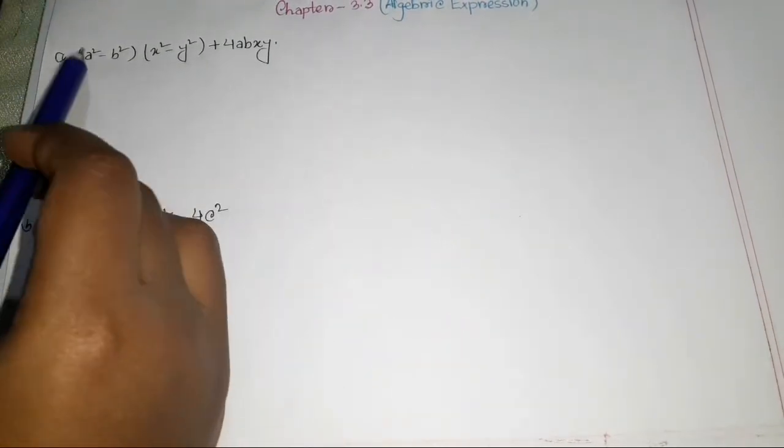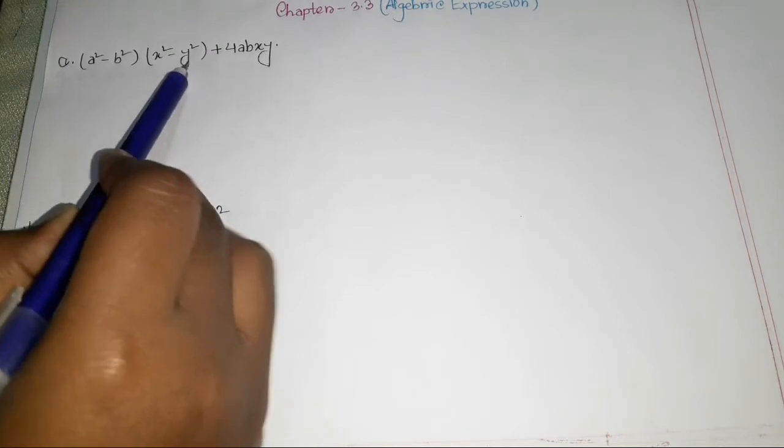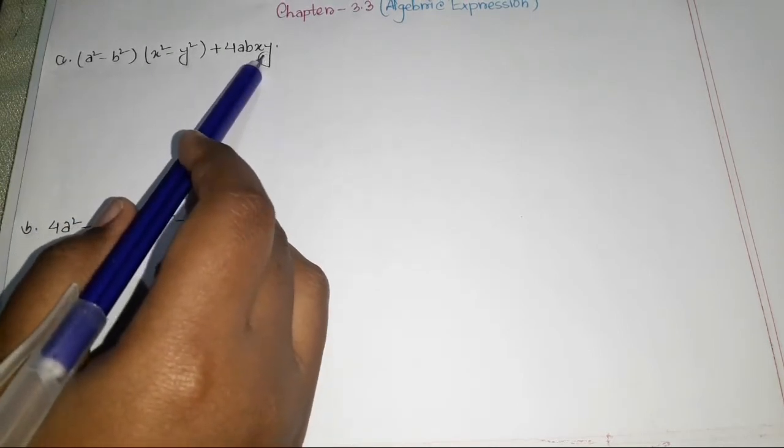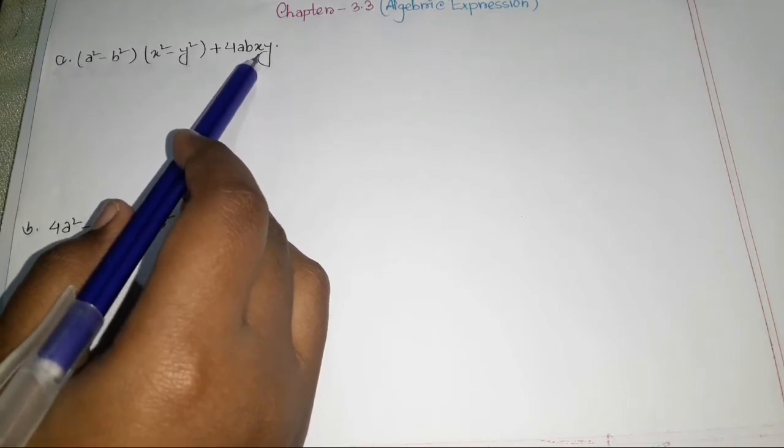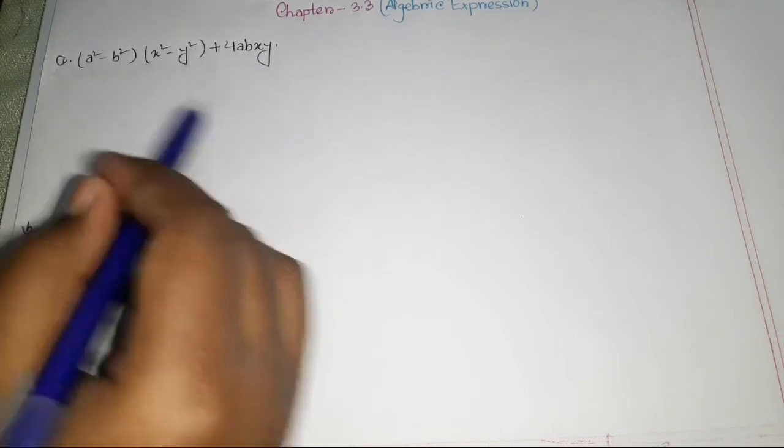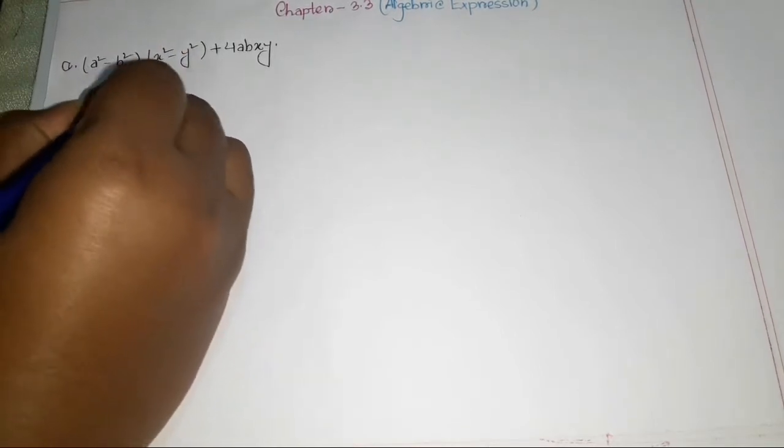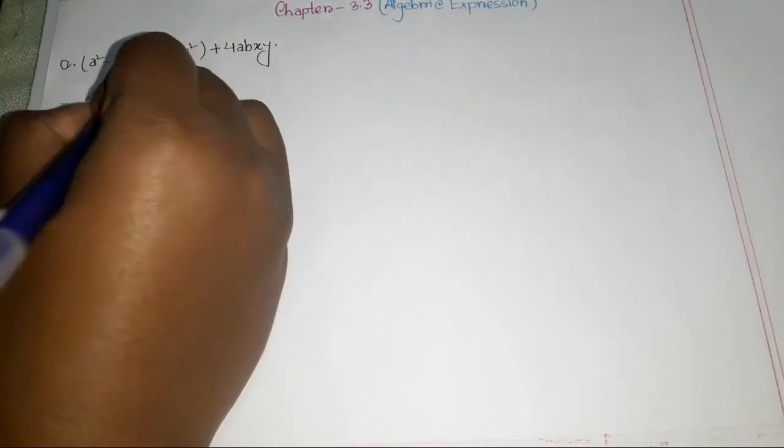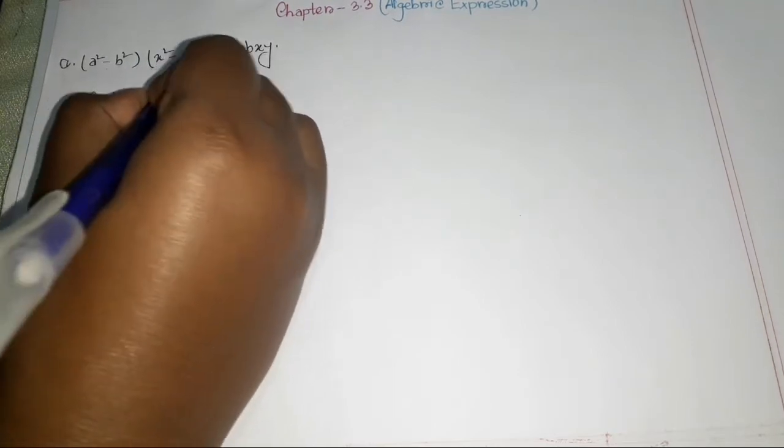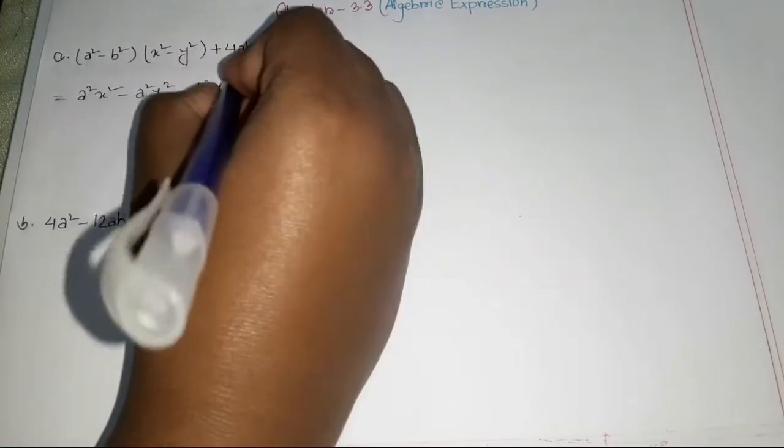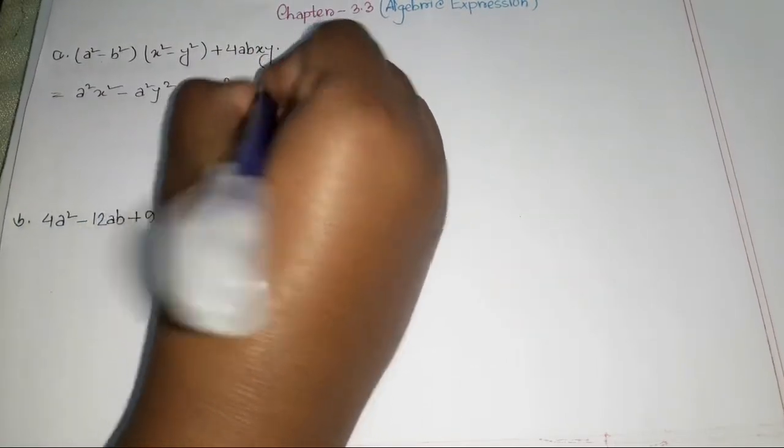The expression is (a² - b²)(x² - y²) + 4abxy. Now, we will expand this. We get a²x² - a²y² - b²x² + b²y².